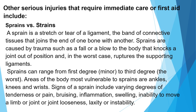Other serious injuries that require immediate care include sprains versus strains. A sprain is a stretch or tear of a ligament — the band of connective tissue that joins the end of one bone with another. Sprains are caused by trauma such as a fall or a blow that knocks the joint out of position and, in the worst case, ruptures the supporting ligaments. Sprains range from first degree (minor) to third degree (the worst). Signs of sprains include varying degrees of tenderness and pain, bruising, inflammation, swelling, inability to move a limb or joint, looseness, laxity, or instability.